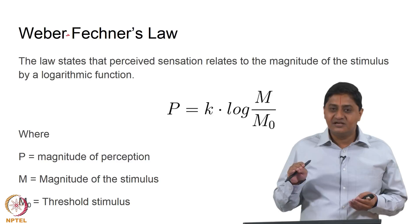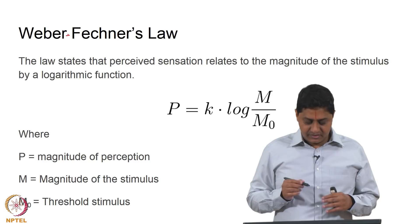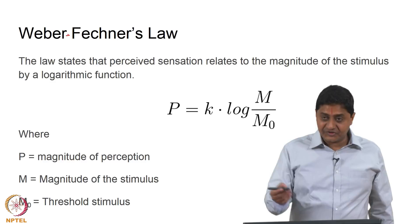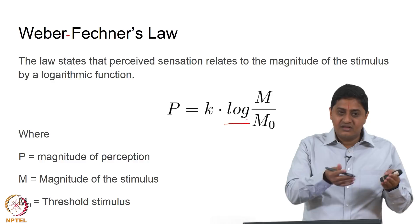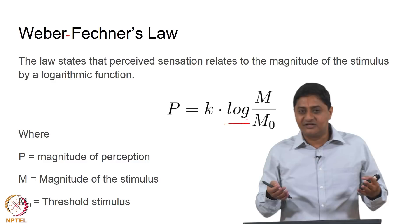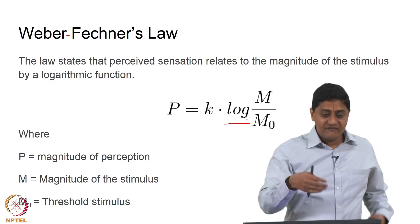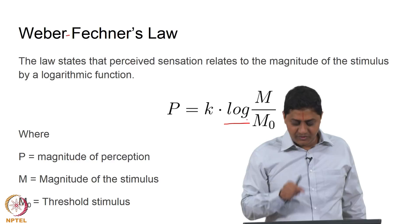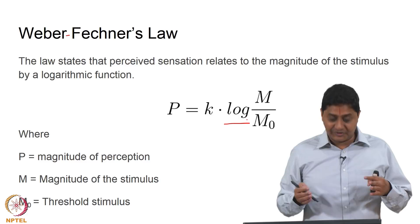Fechner's law describes the relationship between stimulus and perception as logarithmic. If the stimulus changes in a geometric progression — getting multiplied each time — then my perception changes in an arithmetic progression — getting added. The perception changes as a logarithmic function of the stimulus with respect to the threshold stimulus. Together these form the Weber-Fechner law of perception.